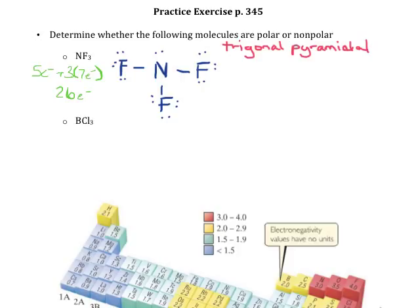I should really redraw this to reflect that geometry. Since it's trigonal pyramidal and comes from tetrahedral, these should really be pointing at the four corners of a tetrahedron, with the lone pair occupying the fourth location on top. Once I have an accurate picture of the geometry, I want to think about where the electrons in the bond are — do I have nonpolar bonds or polar bonds?